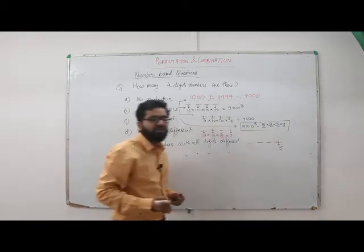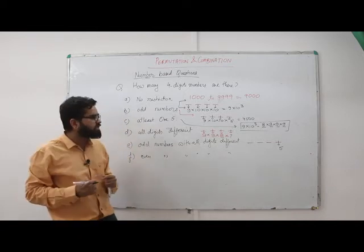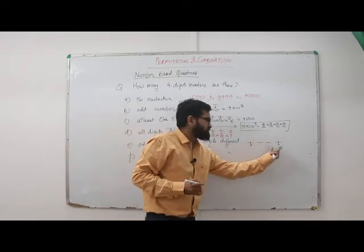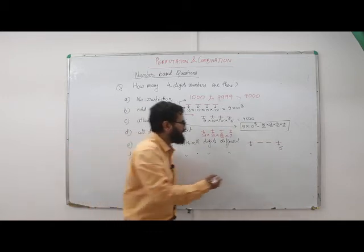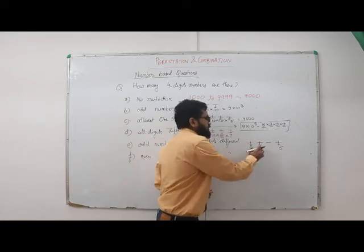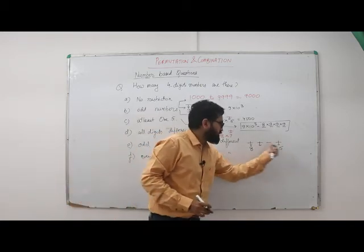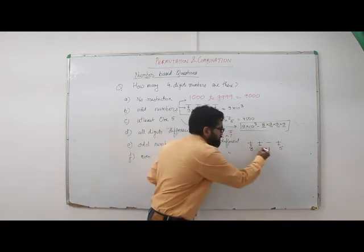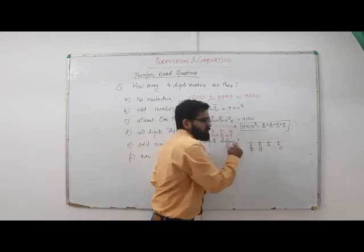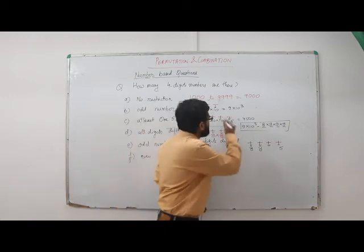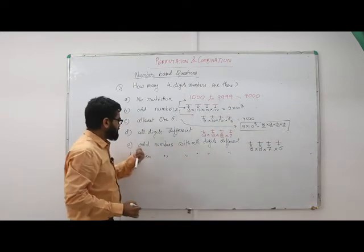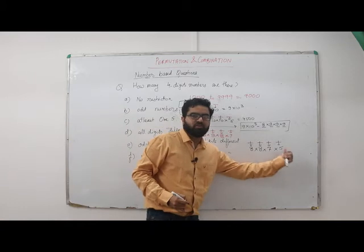At the thousands place we had 9 choices, but one digit is already used at units, so 8 choices. At the hundreds place we had 10 choices but two digits are used, so 8 choices. At the tens place three digits are used, so 7 choices. Therefore, odd numbers with all digits different: 8 × 8 × 7 × 5.